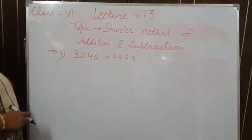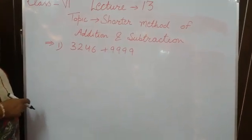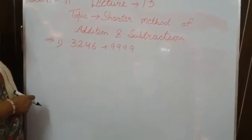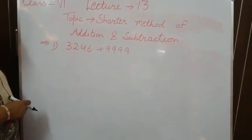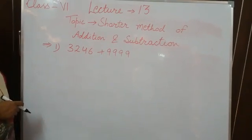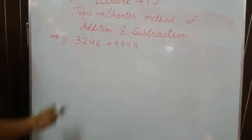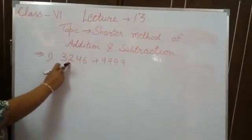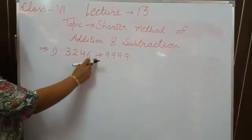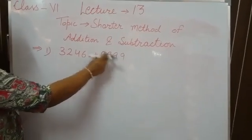Good morning students. This is lecture number 13 and today our topic is shorter method of addition and subtraction. Now your statement is 3246 add 9999.